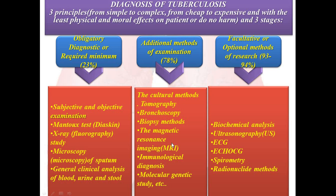After the additional examination stage, if we still do not make a diagnosis, we proceed to the facultative or optional method of research, where we examine systems and organs separately. This includes spirometry, spirography, biochemical analysis such as liver enzymes, ultrasonography, echocardiogram, ECG, and related nucleated mass analyses. Even after these three stages, we make a diagnosis in only about 94% of cases.